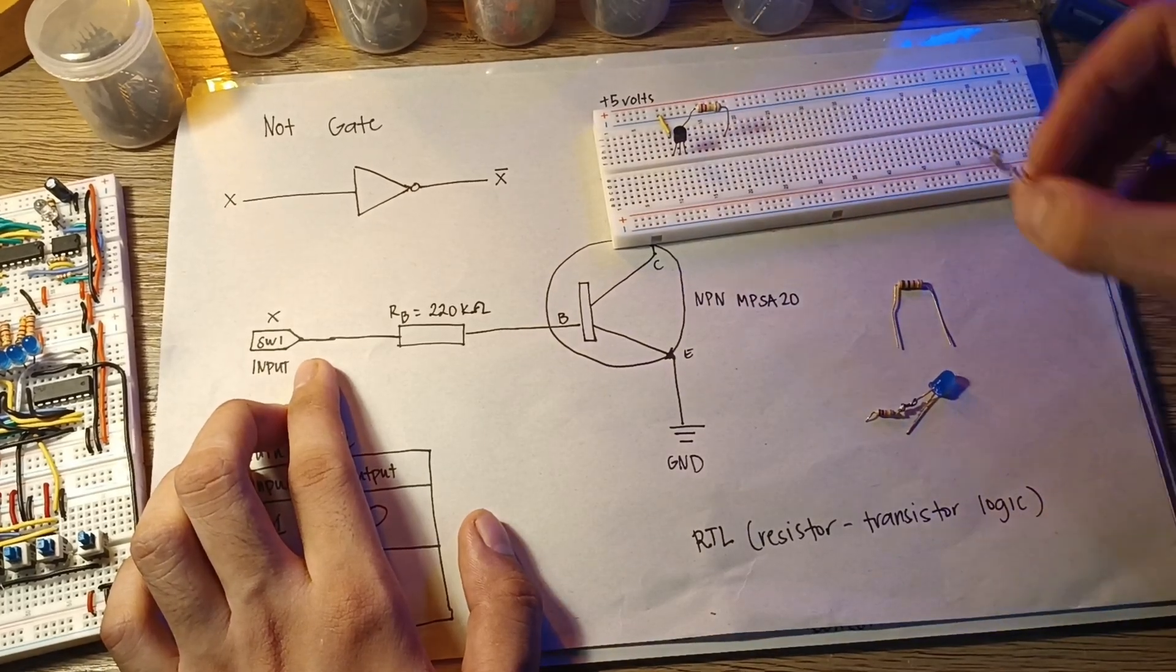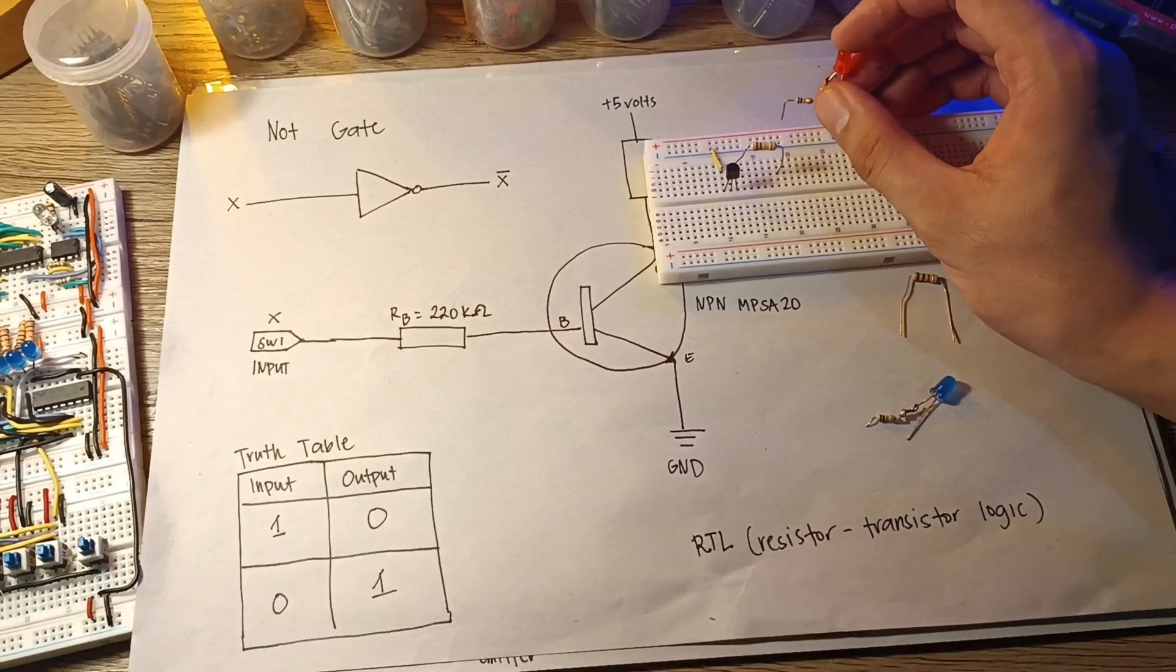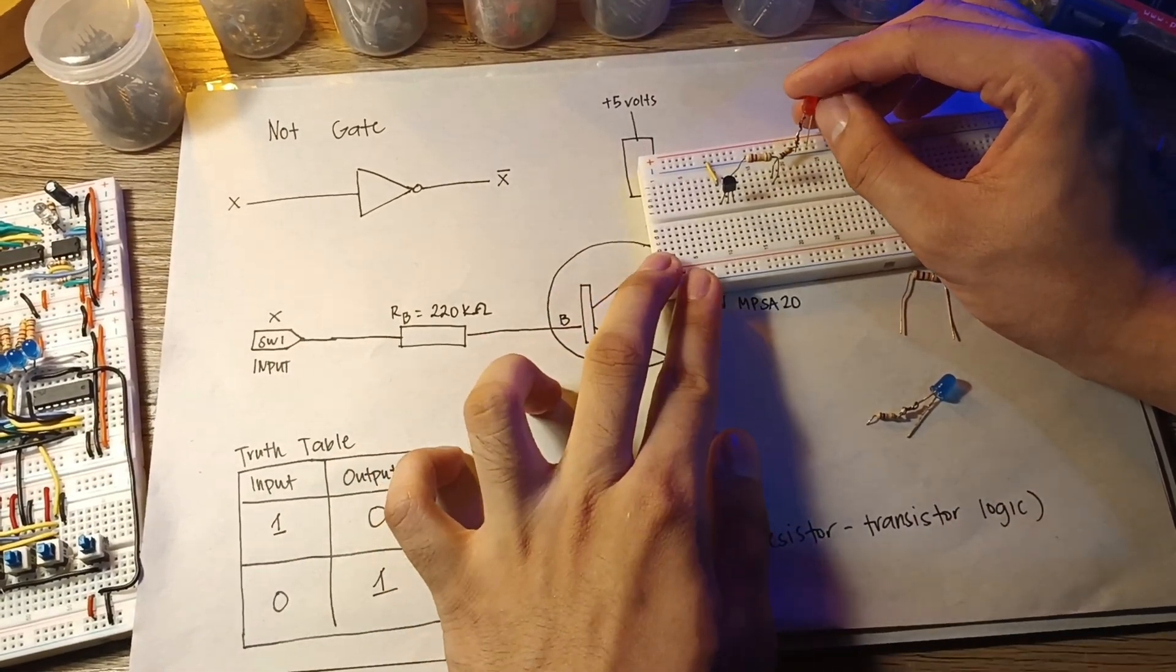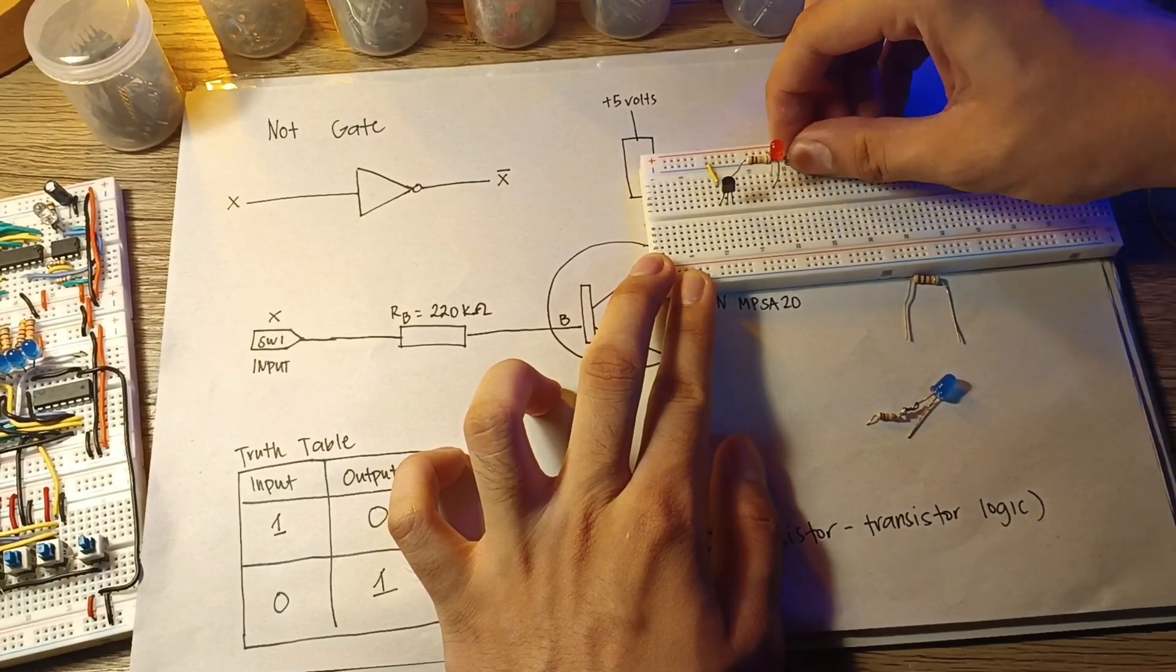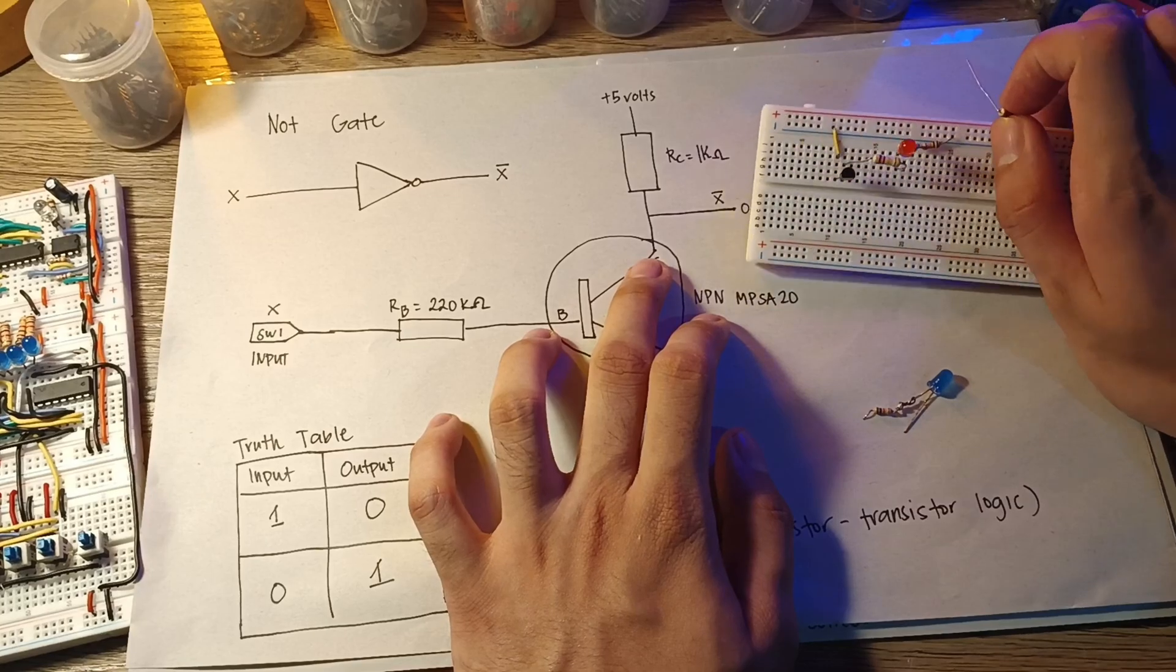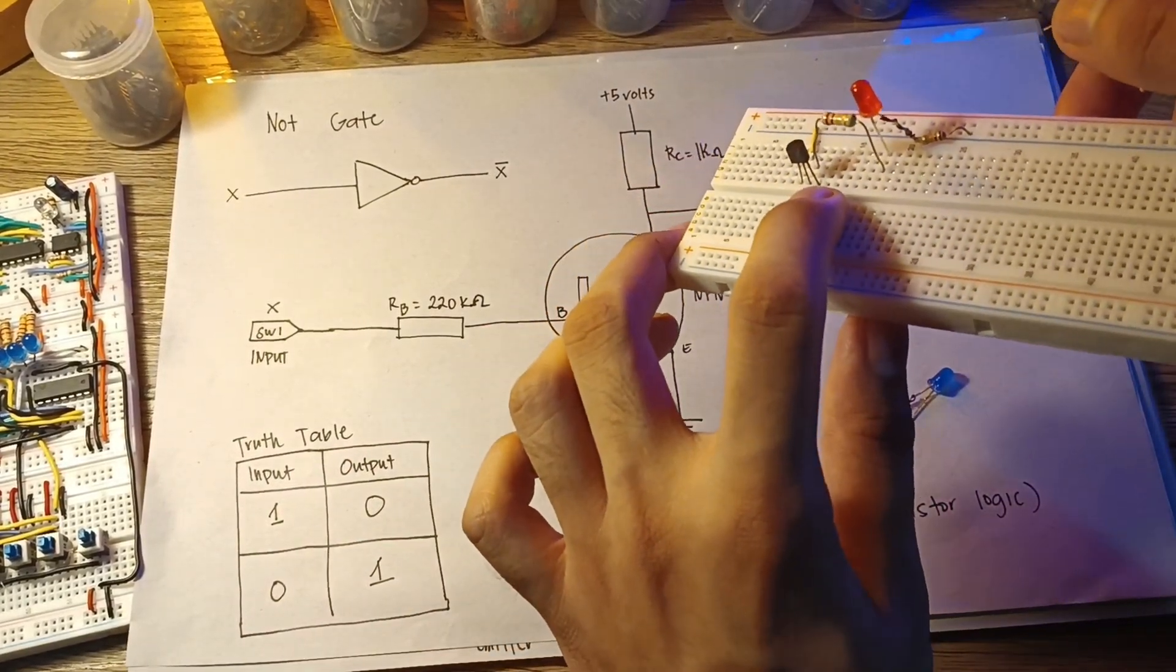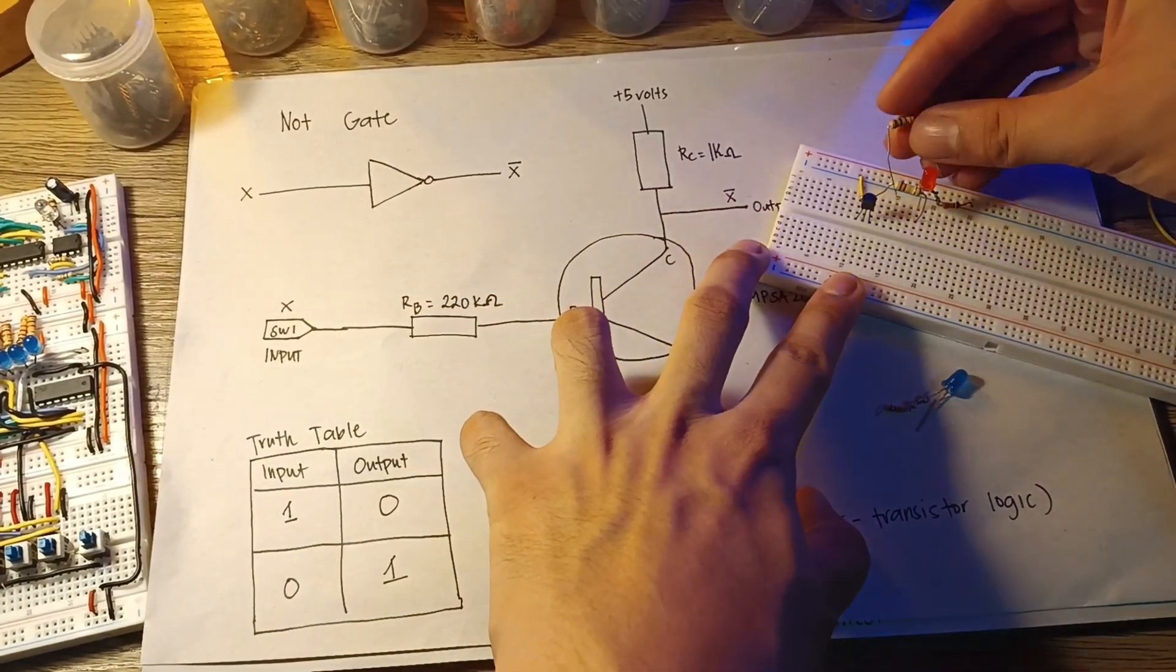I will put an LED for indication here. Red is the input. The collector, which is the right leg, is connected to the 1kohm resistor and is connected to the 5 volts.